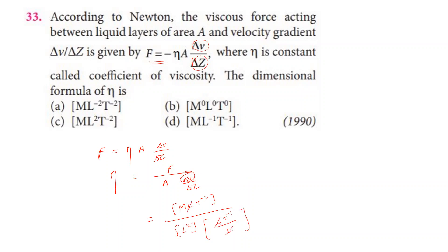Cancelling L terms: L goes up, giving M. Then T power: minus 2 minus (minus 1) gives T⁻¹. So η has dimension ML⁻¹T⁻¹. For question 33, the fourth option is the correct answer.